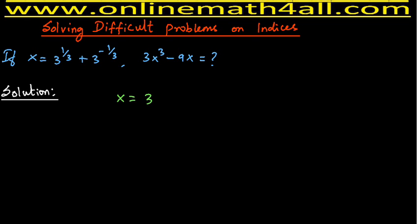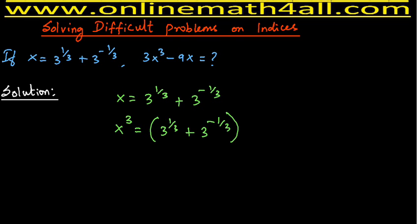The given information is x equals 3 to the power 1/3 plus 3 to the power negative 1/3. I take power 3 on both sides because we need x³ in the given question. When we raise this to the power 3, we notice that two different terms are added and we have the whole to the power 3 — so it is in the form of (a + b)³.